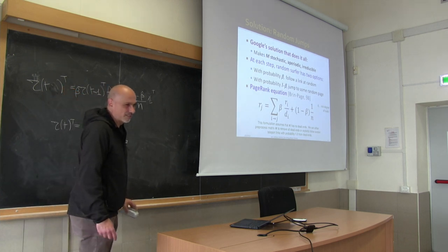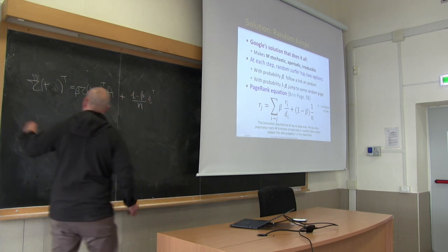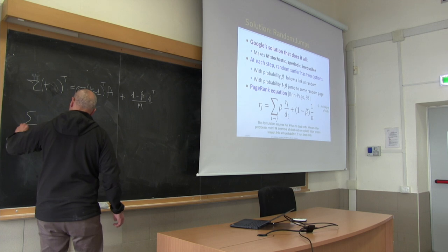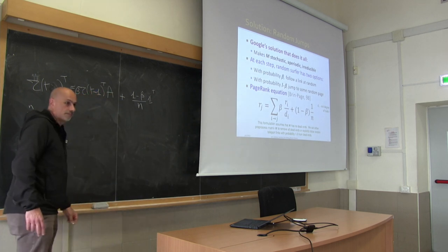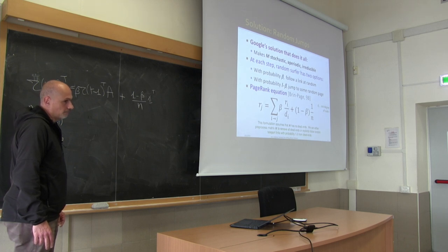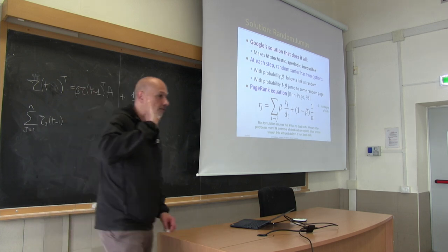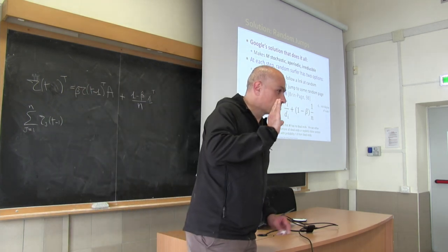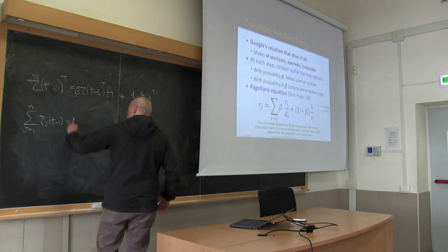Actually, that is a clever trick. Remember: the sum of the probability distribution vector is always 1 — it is a probability distribution, that is why we made the matrix stochastic in the first place. So the sum of the r vector is always 1.